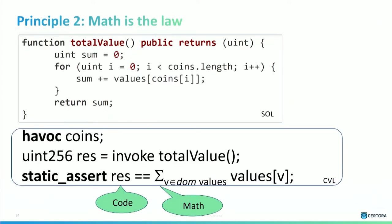The second principle is to shift from 'code is the law' to 'math is the law.' For us and our customers, math is the law, not code. We want the programmer to write the spec in math, borrowing from VDM and similar approaches. Here is an example: a function that iterates over a list and sums the elements. We havoc the coins to generalize, and then check that the result produced by the code is equivalent to the mathematical definition.